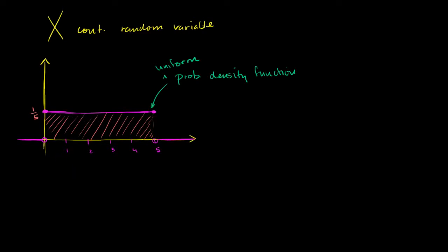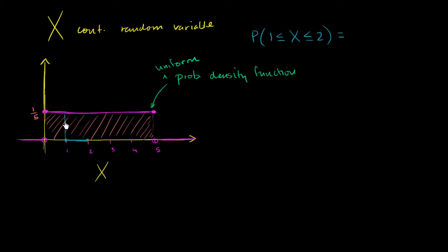Given that we've defined this probability density function, let's think about some probabilities. What is the probability that x is greater than or equal to 1 and less than or equal to 2? You look at all the possible values x can take on between 1 and 2, and the combined probability is the area under the curve in that range. The base is 1 and the height is 1/5, so it's 1 times 1/5, which equals 1/5.